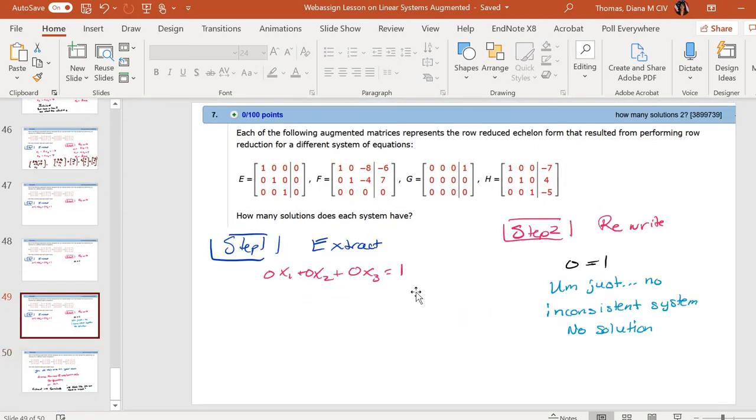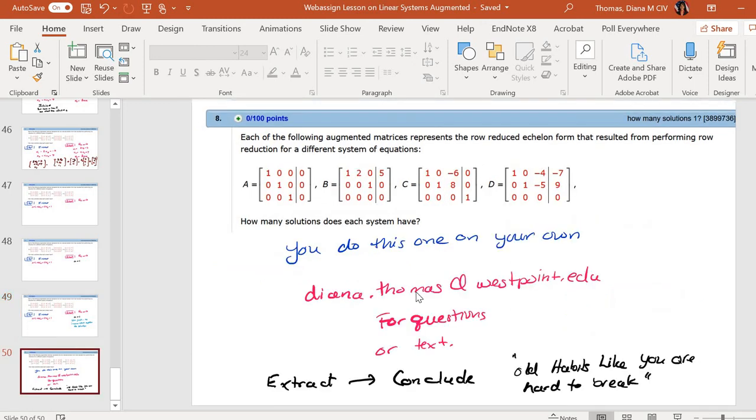And I'm not going to do h. I'm going to let you do h. These are all kind of the same thing over and over. And in fact, I'm not even going to do number 8, because number 8 is just like number 7. I'm going to let you work through this. It's always extract, then conclude.